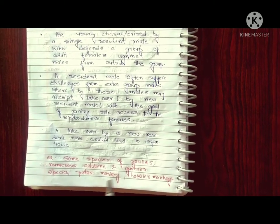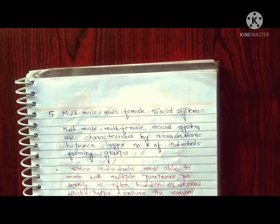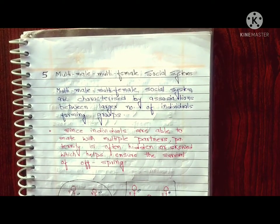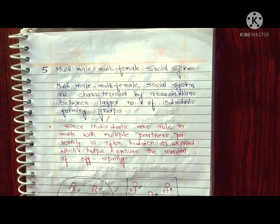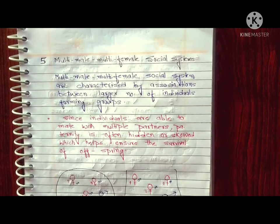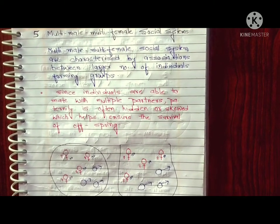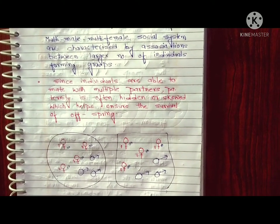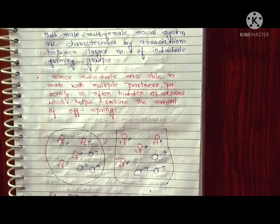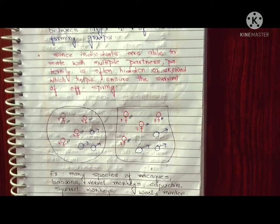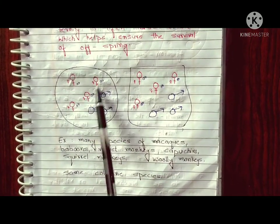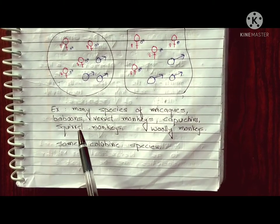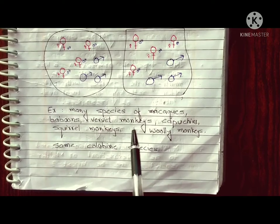The next is the multi-male and multi-female social system. This system is associated with large groups where individuals can mate with multiple partners. In this situation, paternity is hidden, which increases the offspring survival rate, as multiple males may protect the offspring.